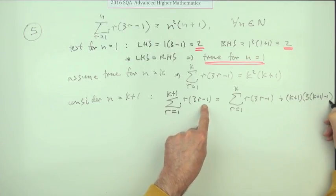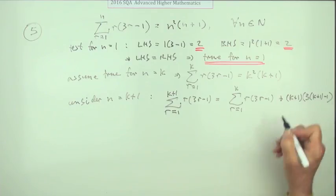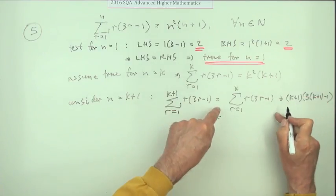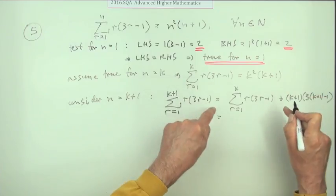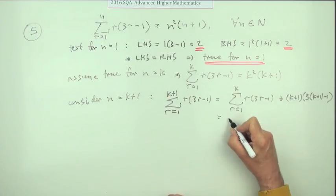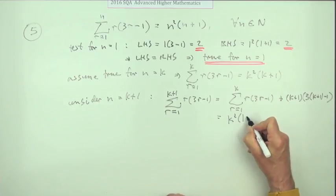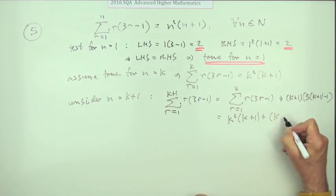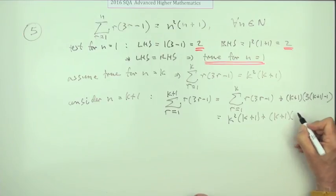Minus 1. Now you call in the inductive hypothesis. That's a critical step. You call in the inductive hypothesis so this can get replaced by that. So you've got k squared times k plus 1 plus, we'll just tidy this up a bit, k plus 1 times and that's 3k plus 3 minus 1 minus 2.